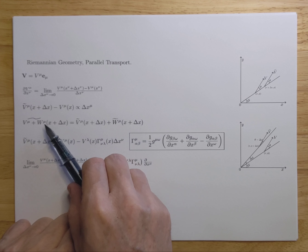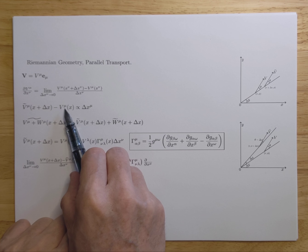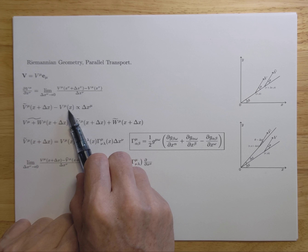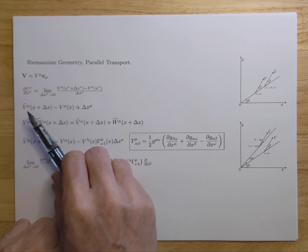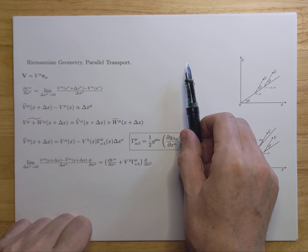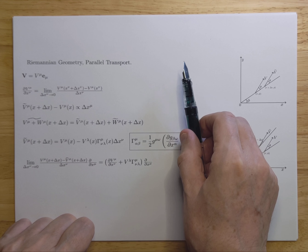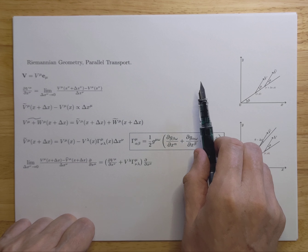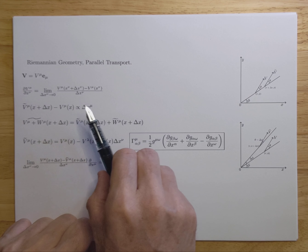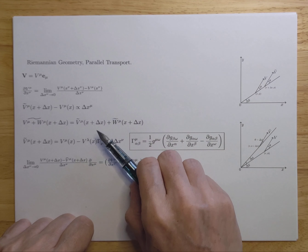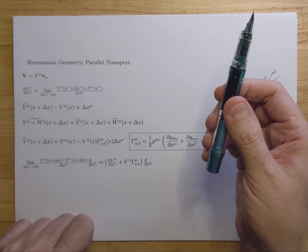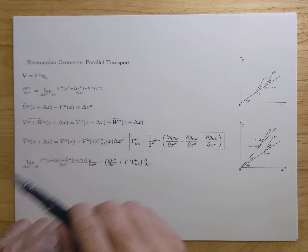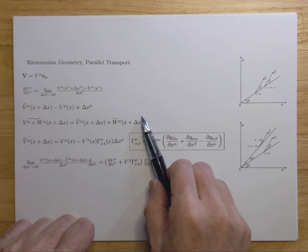You would also like the transport to be linear. So if you have a vector v at position x and another vector w at position x, and you add them up and parallel transport them to get a new vector, it should be the same as first transporting v, then transporting w, then adding them up at the transported location x plus delta x.